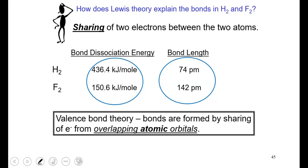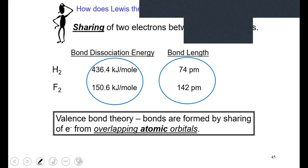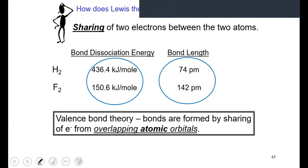Today we discuss valence bond theory, or VB theory, which proposes that bonds are formed by the sharing of electrons from overlapping atomic orbitals. The atoms involved put forth orbitals containing electrons, and those orbitals overlap — like clouds of electron density merging into each other. For hydrogen, two 1s orbitals overlap; for fluorine, two 2p orbitals overlap to form the covalent bond.